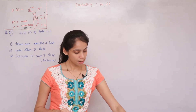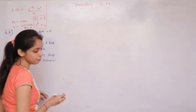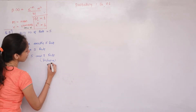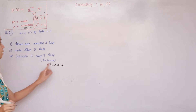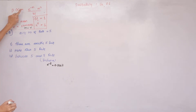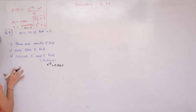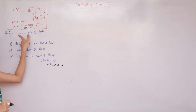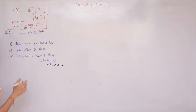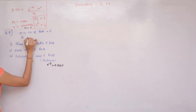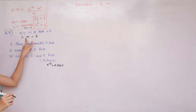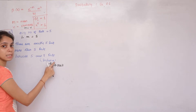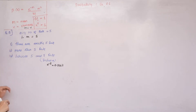Given that e raised to minus 5 equals 0.0067. We have to use this value in the formula. For the first condition, the average number of reds equals 5, therefore m equals 5, and e raised to minus 5 is given.